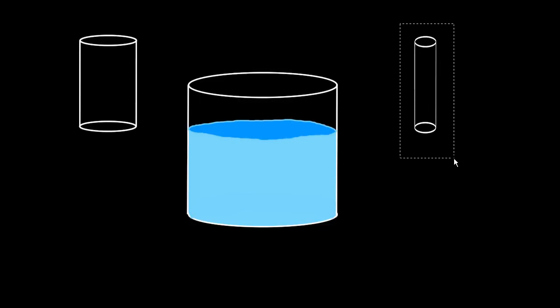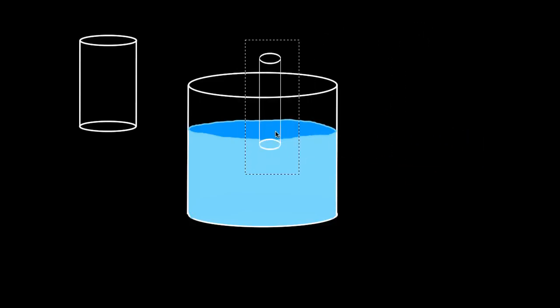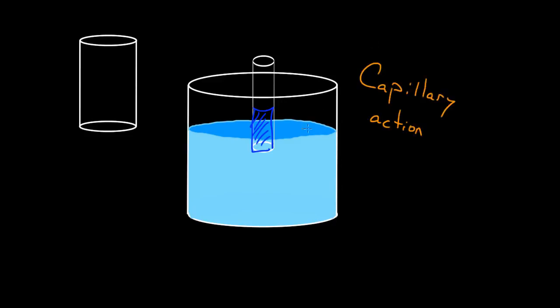If you take an even smaller diameter tube and put it in there, the smaller the tube, the greater this effect. You'd get water rising to an even higher level within this tube due to adhesion to the walls. The name for this effect is capillary action, which is important in a variety of biological and non-biological examples where fluid is aided in transport partially by attraction to the walls of the container or tube that it's flowing in.